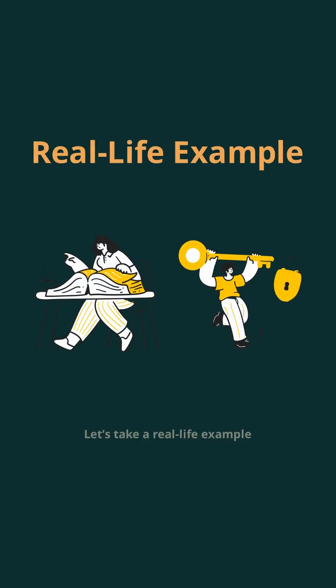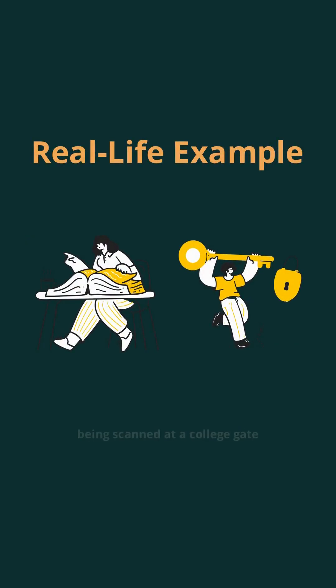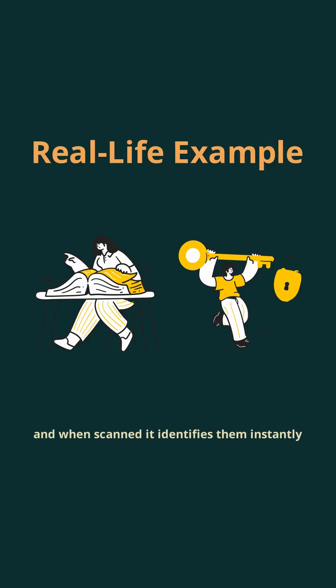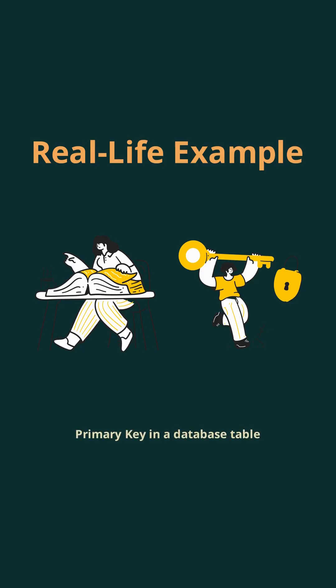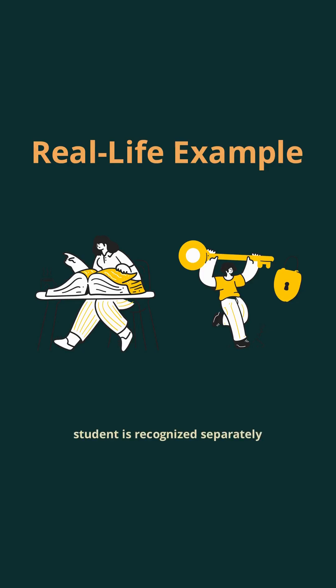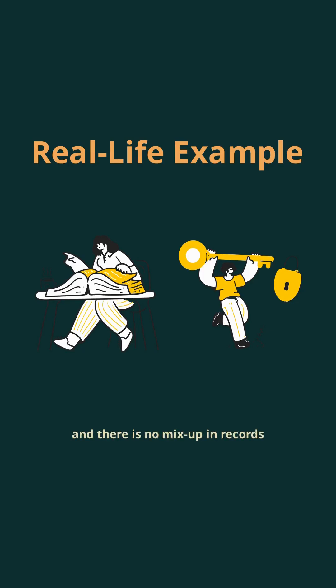Let's take a real-life example. Think about student ID cards being scanned at a college gate. Each student has a unique ID card and when scanned, it identifies them instantly. This is just like a primary key in a database table — it ensures that each student is recognized separately and there is no mix-up in records.